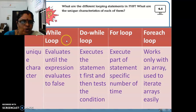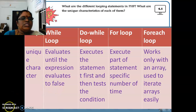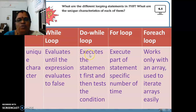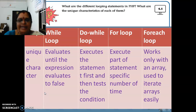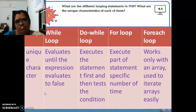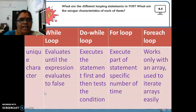The unique characteristics: while loop evaluates until the expression evaluates to false. Do while loop executes the statement first and then tests the condition. For loop will execute part of the statement a specific number of times — that is the unique characteristic of the for loop. For each loop works only with an array and is used to iterate arrays easily.